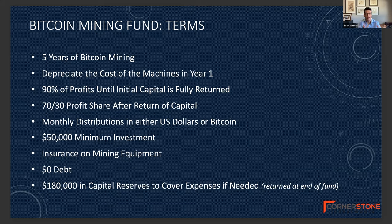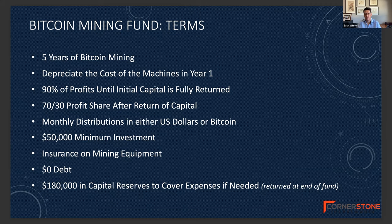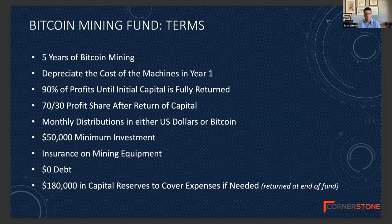In general, the fund terms: it's a seven-year Bitcoin mining fund. In year one, investors will be able to depreciate about 70% to 75% of their initial investment. Investors will receive 90% of the Bitcoin distributed until their initial capital is fully returned — we're anticipating that will take approximately 26 months. After that, the investors will receive 70% of all Bitcoin distributed each month, and the general partners will receive 30%. Investors can choose to receive their distributions in U.S. dollars or in Bitcoin.